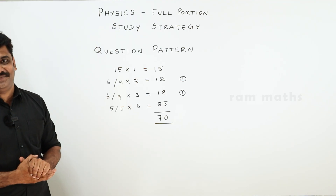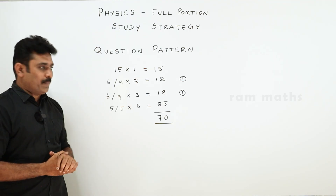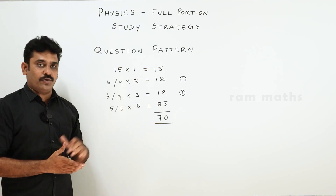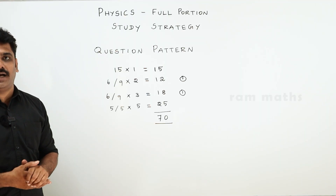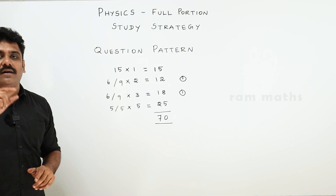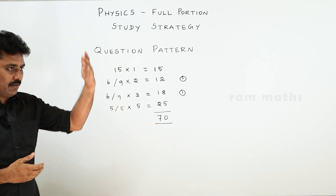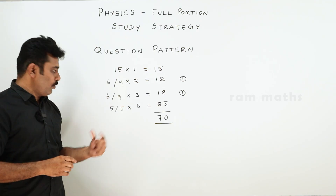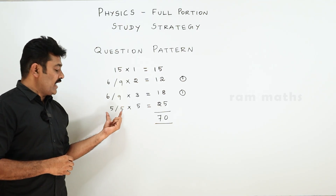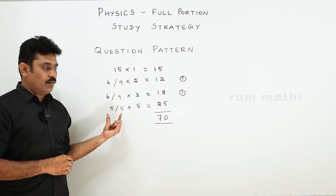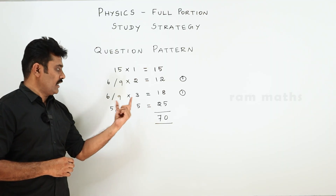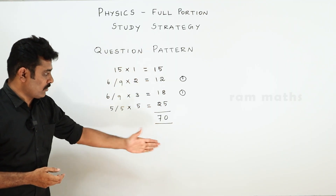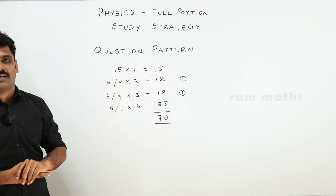Next is Part 4. You have 5 questions, 5 into 5 is 25 marks. It is either-or type — you answer any 5 questions from the open-choice options. The total marks you have to cover is 70 marks. This is the question pattern.